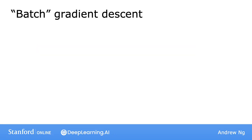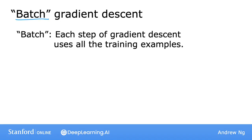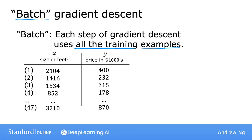To be more precise, this gradient descent process is called batch gradient descent. The term batch gradient descent refers to the fact that on every step of gradient descent, we're looking at all of the training examples instead of just a subset of the training data.